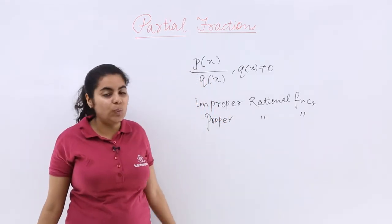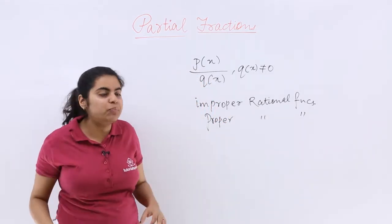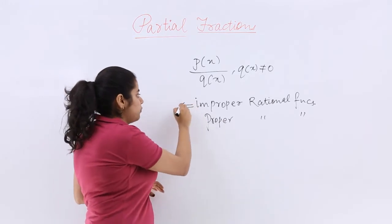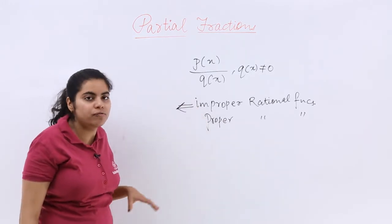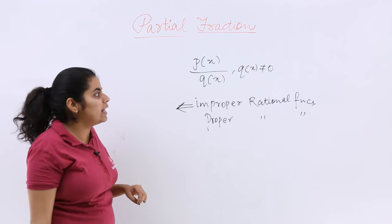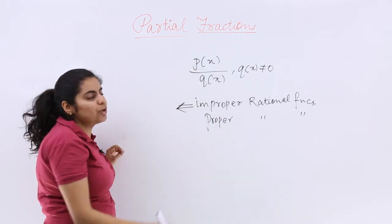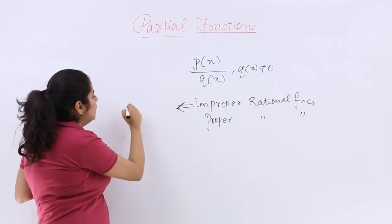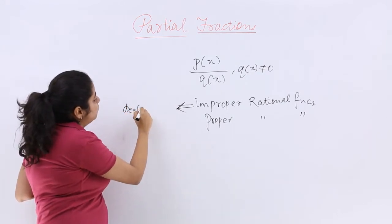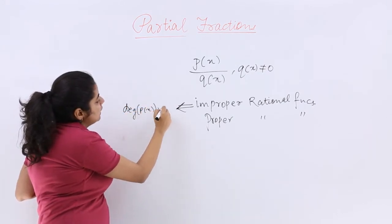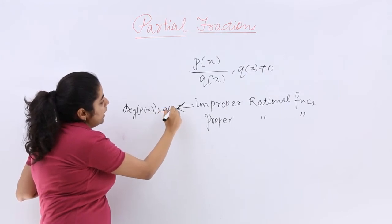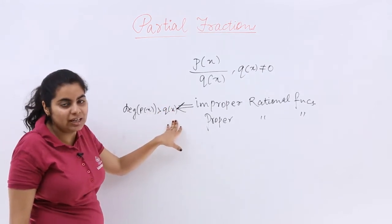So these two categories would only be there. Improper rational functions refers to that category of rational functions wherein in the numerator upon denominator, that means p(x) upon q(x) form, my degree of p(x) is greater than the degree of q(x).